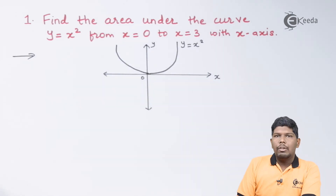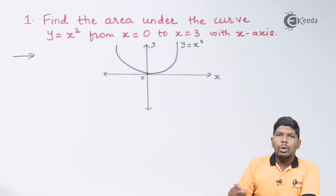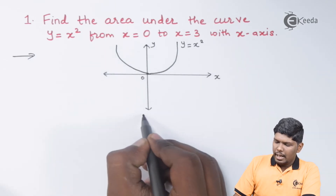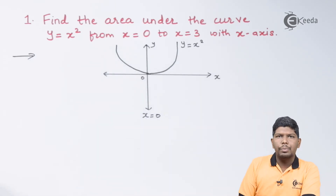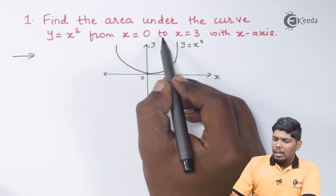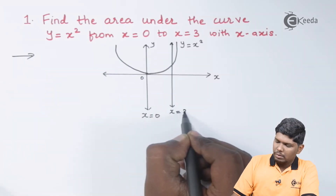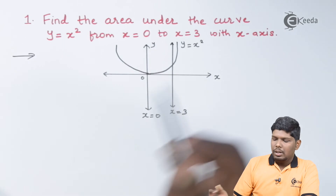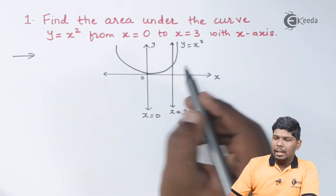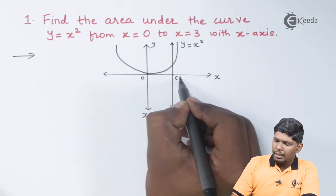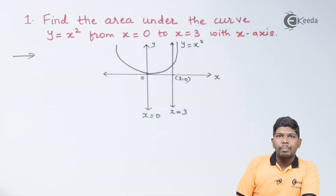This is our parabola y = x². Now x = 0 is the equation of the y-axis, so this is the y-axis and its equation is x = 0. The next equation is x = 3, so this line will pass through the point (3, 0), which is on the x-axis.